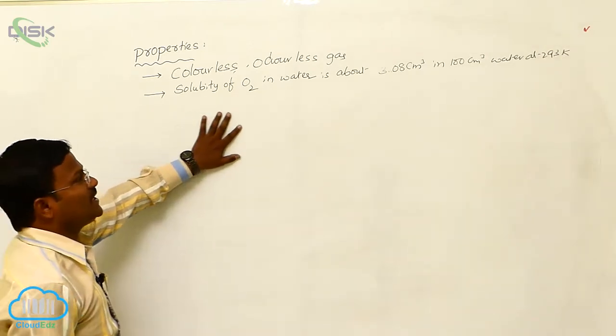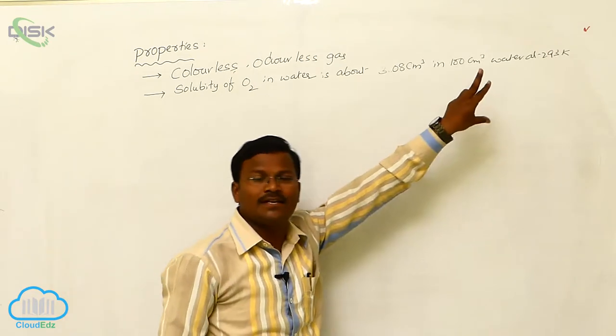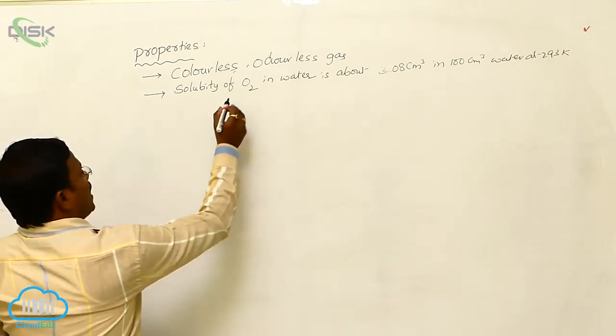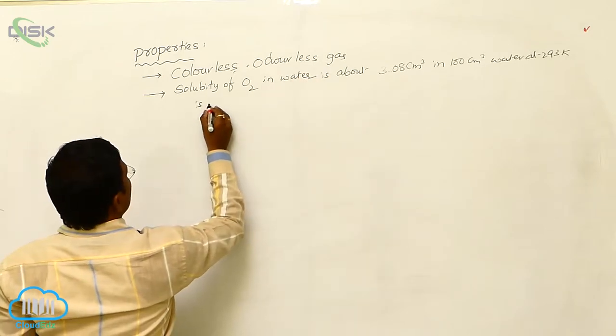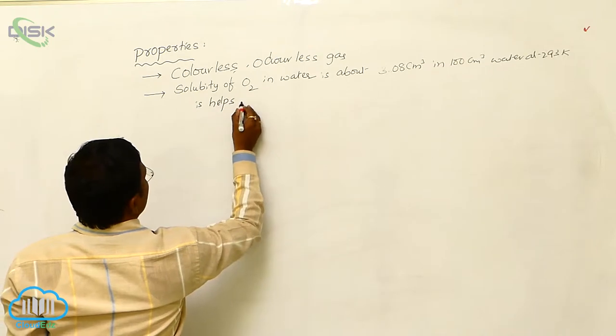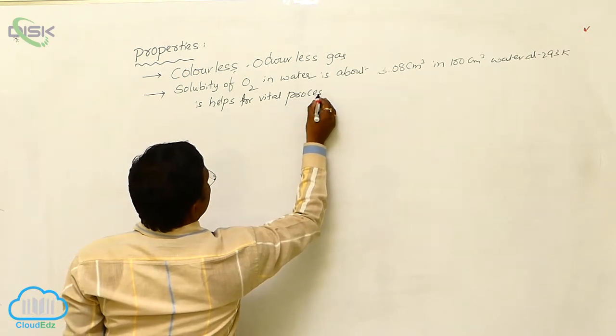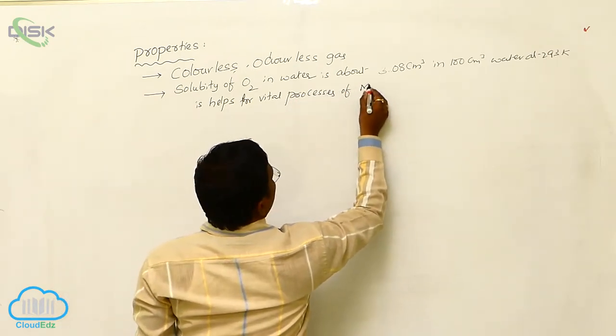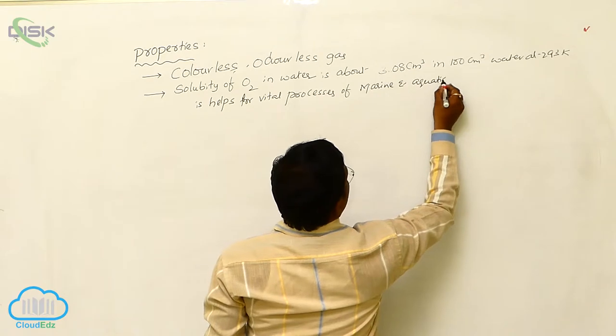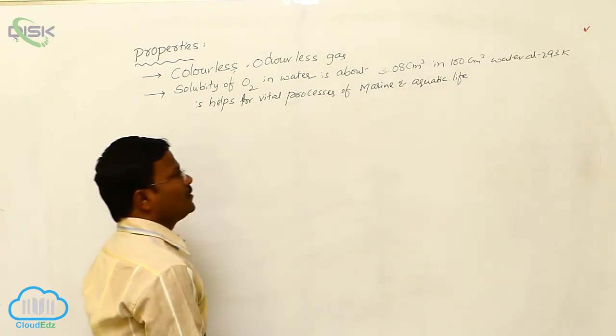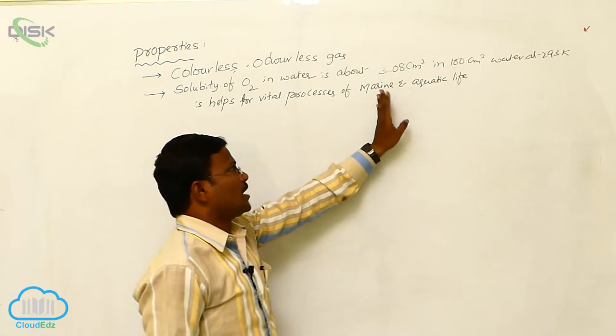So this is the quantity of oxygen which may dissolve in water at 293 Kelvin temperature. The amount of oxygen dissolved in water helps for vital processes of marine and aquatic life. So it is sufficient for living organisms which may be present in marine water and aquatic water, that means salt water and fresh water.